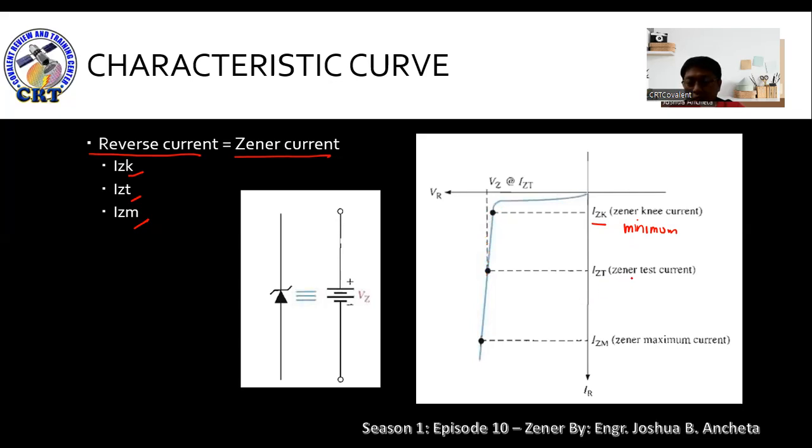IZT is the Zener test current, the rated Zener current. IZM is the Zener maximum current. Take note, if the Zener is properly reverse biased, its equivalent is a battery with this polarity. When you apply proper biasing of the Zener which is reverse bias, it acts as a battery with this polarity - positive at the cathode side and negative at the anode side.